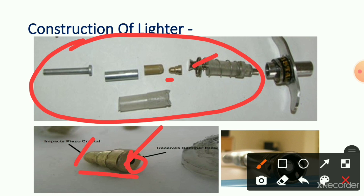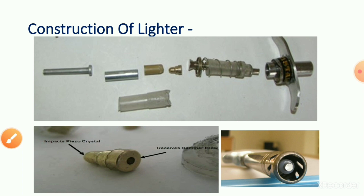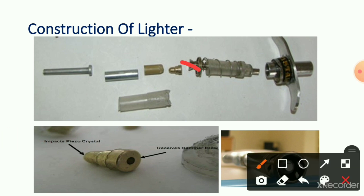Inside the cylindrical lighter, the arrangement is made such that when we press the lighter, the spring stores potential energy. This potential energy is converted to kinetic energy of the hammer. The hammer gets pushed and hits the piezoelectric crystal, and due to this impact, a high voltage of about 800 volts is discharged.